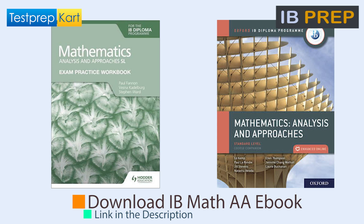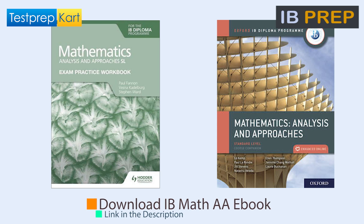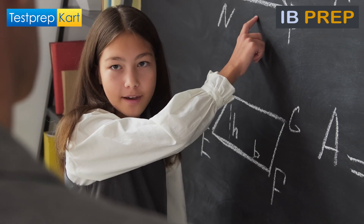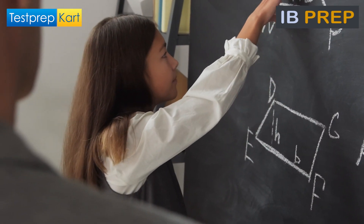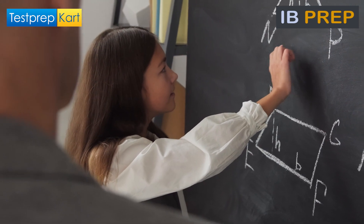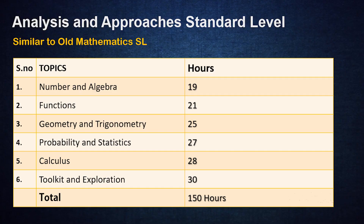Mathematics Analysis and Approaches is similar to the old Math SL. It is for students who are interested in mathematics, are fairly moderate at it, and want to study math after high school. Like the old Math SL, it is for 150 hours. Topics covered in Math AA SL: Number and Algebra for 19 hours, Functions for 21 hours, Geometry and Trigonometry for 25 hours, Probability and Statistics 27 hours, Calculus for 28 hours, and Toolkit and Exploration for 30 hours.